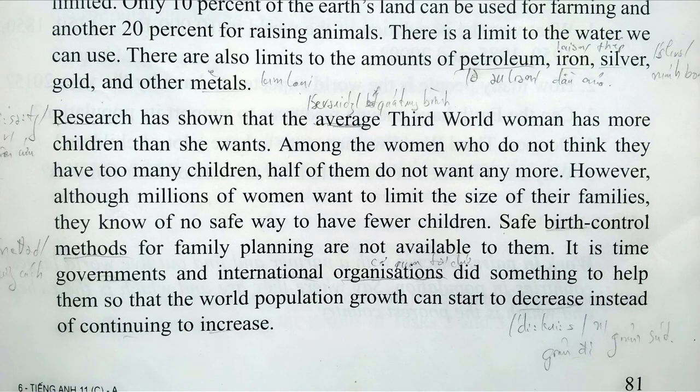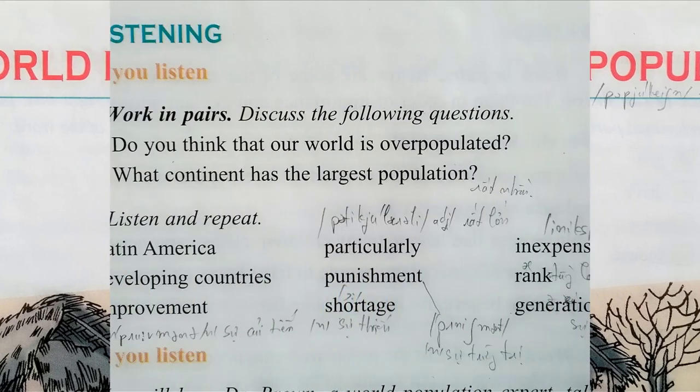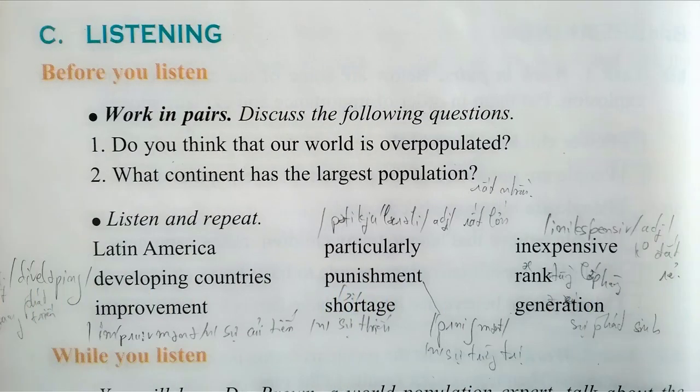It is time governments and international organizations did something to help them, so that world population growth can start to decrease instead of continuing to increase. You will hear Dr. Brown, a world population expert, talk about the world population. Listen to the interview and do the tasks that follow. Task one: listen and choose the best answer — A, B, C, or D — for the following statements and questions.